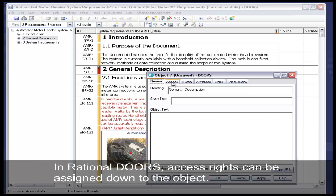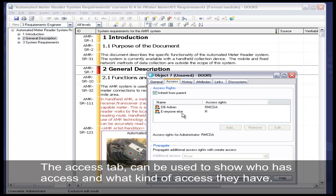In rational doors, access rights can be assigned down to the object. The access tab can be used to show who has access and what kind of access they have.